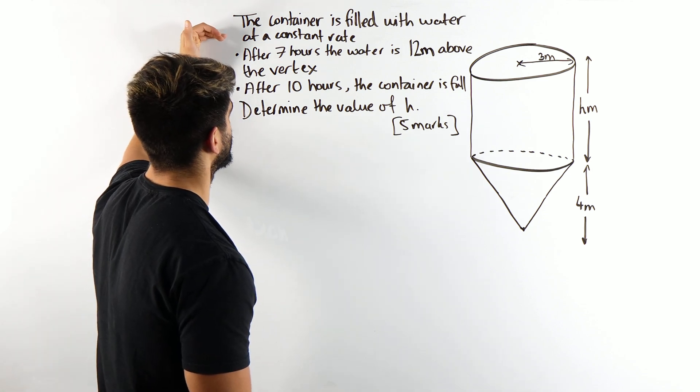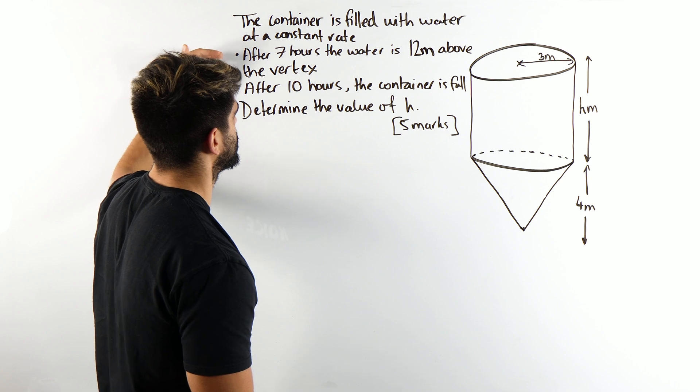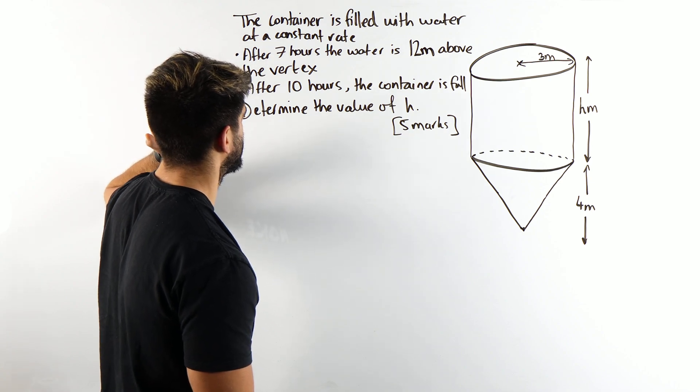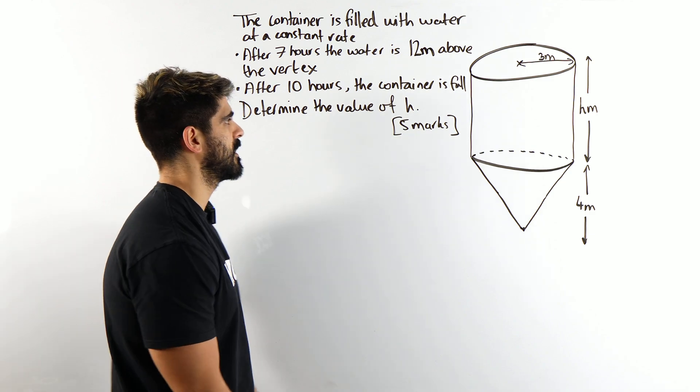The container is filled with water at a constant rate. After seven hours, the water is 12 meters above the vertex. After 10 hours, the container is full. Determine the value of h.